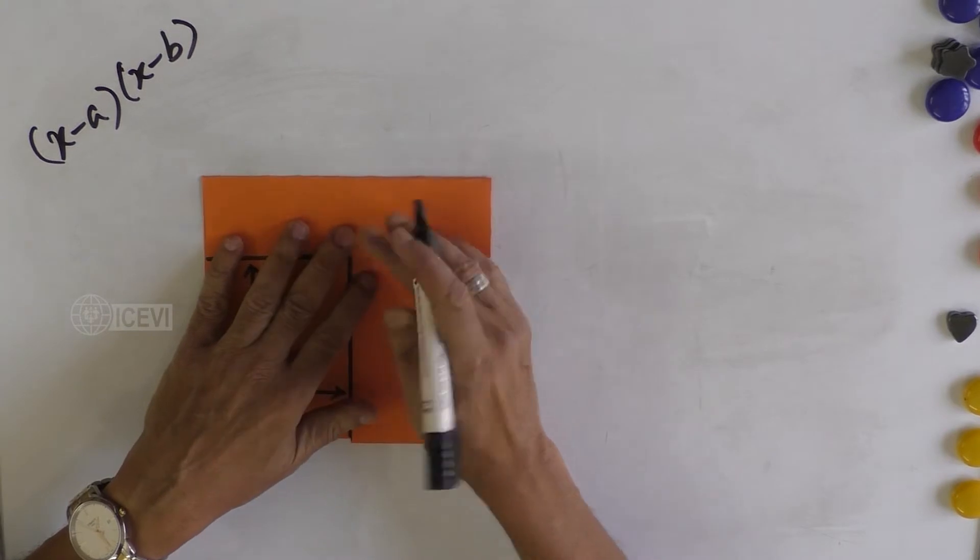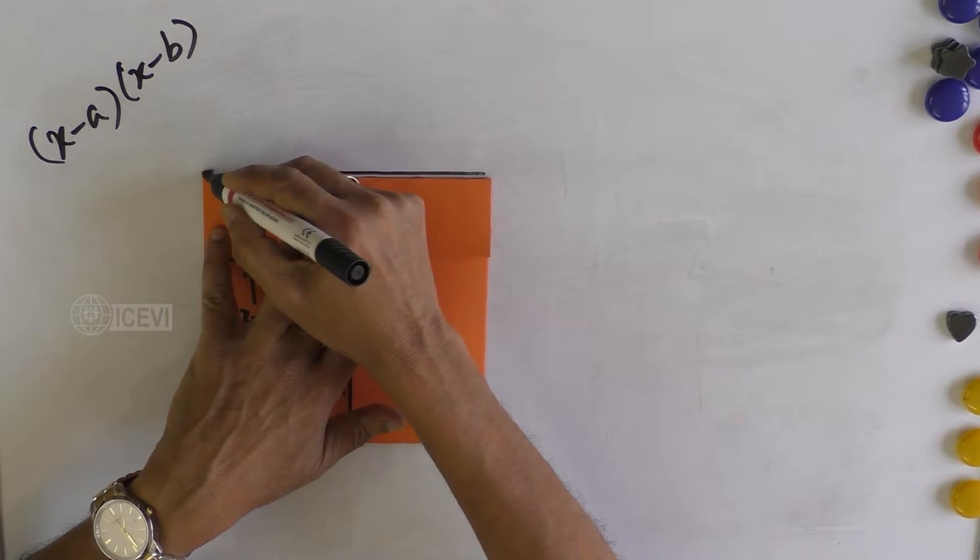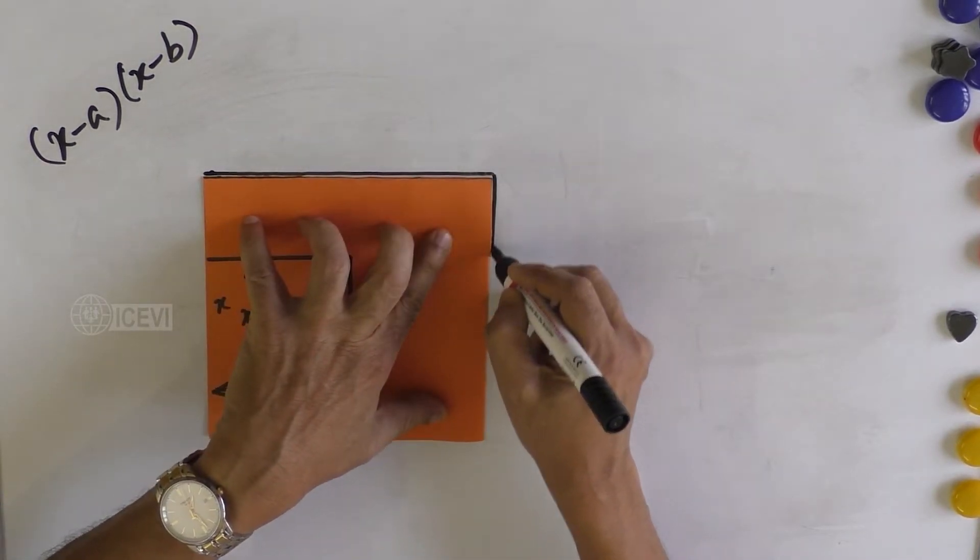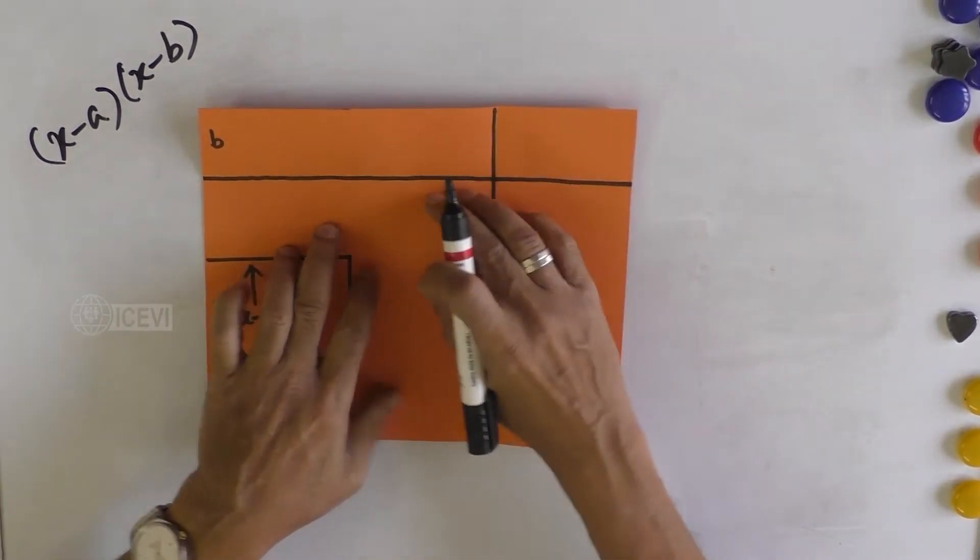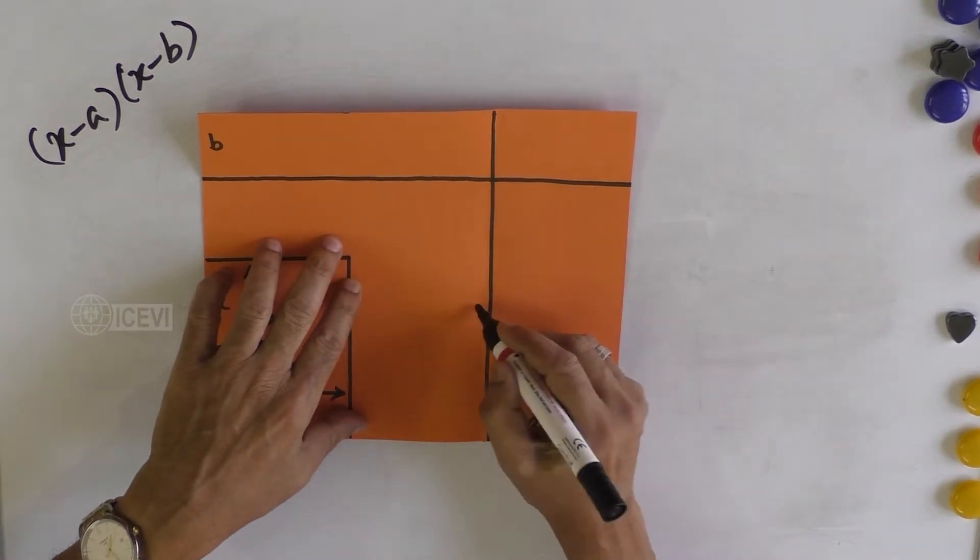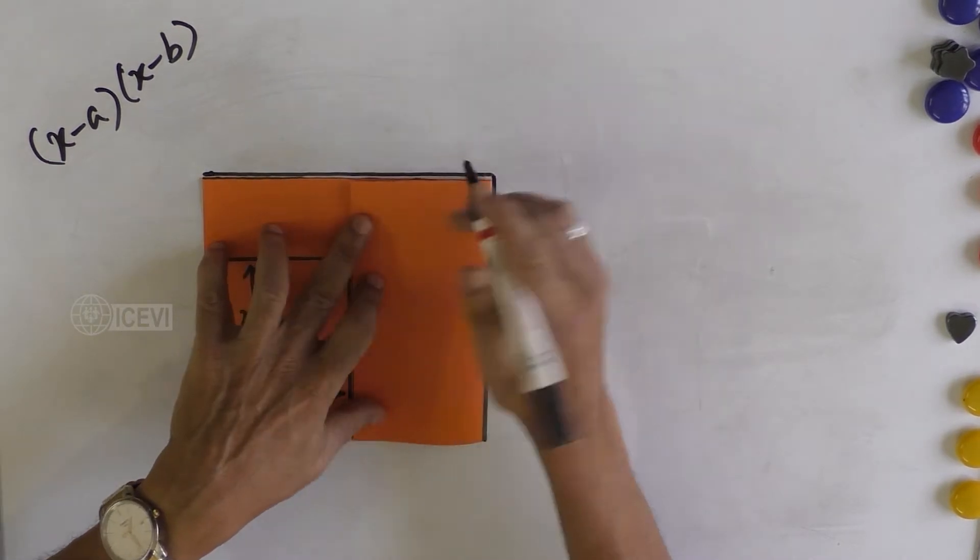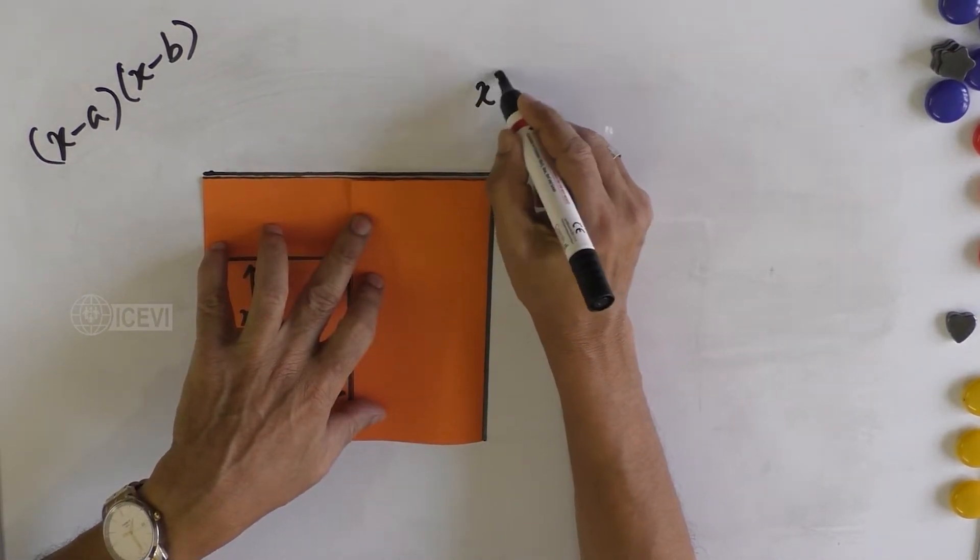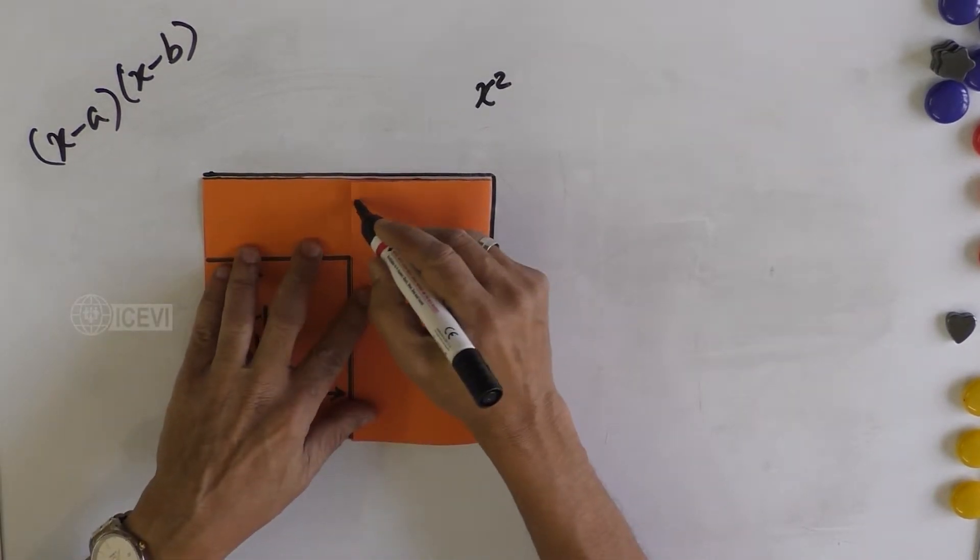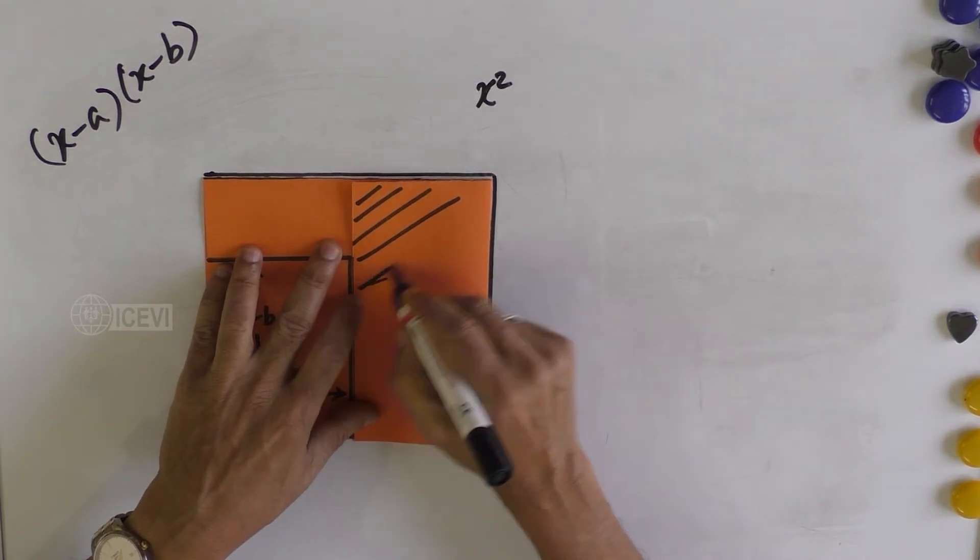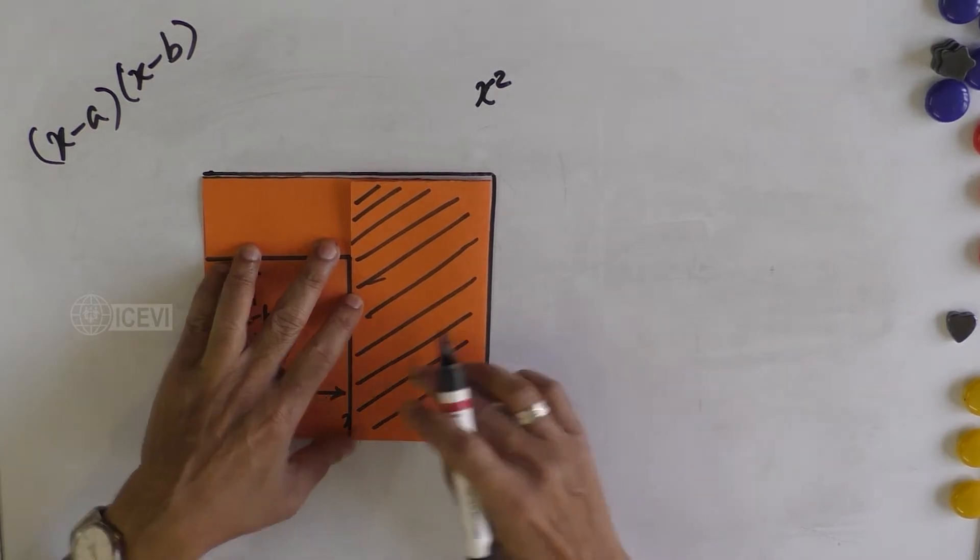We have to look at the known values. Let us look at the outer value of this square. The outer value of the square is X and X, so that means the outer value is X². Now from this X² you have to subtract the unwanted areas to get (X-a) multiplied by (X-b).